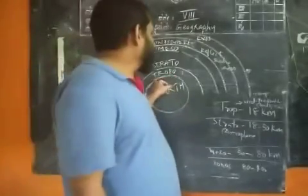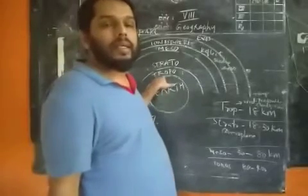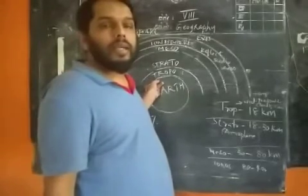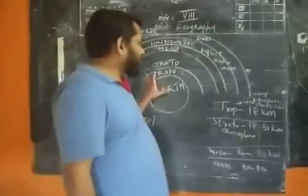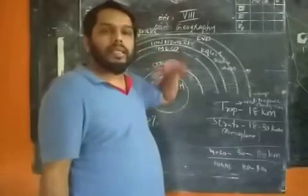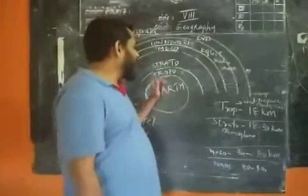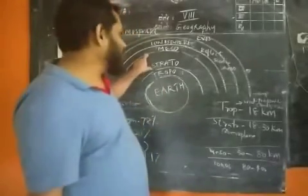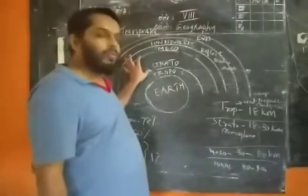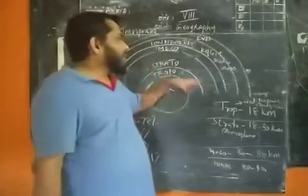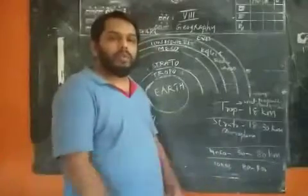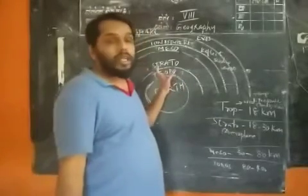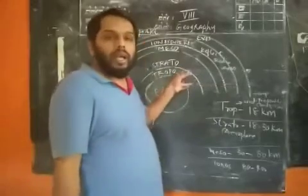The first layer is the troposphere. Its height ranges from 8 kilometers at the equator to 18 kilometers at the polar regions. Above the troposphere is the stratosphere, ranging from 18 kilometers to 50 kilometers. Many jet planes travel through the stratosphere where there are no clouds or hindrance. In the troposphere, we see mountains, clouds, and precipitation — rainfall mainly occurs in this tropospheric layer.